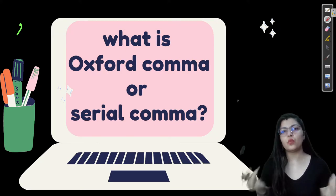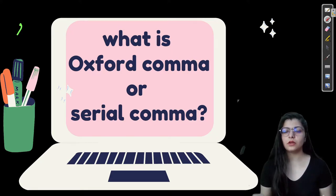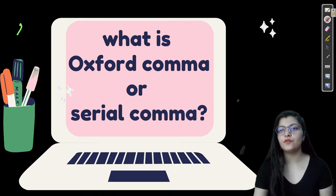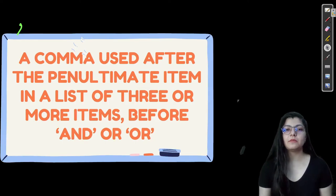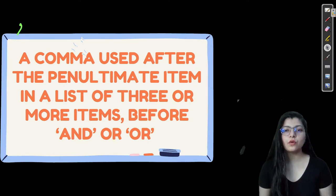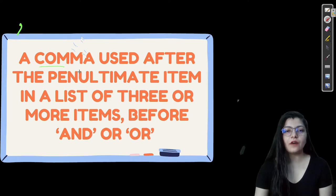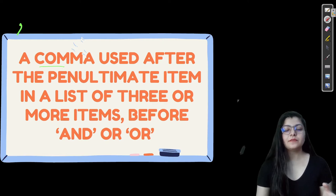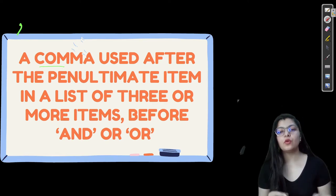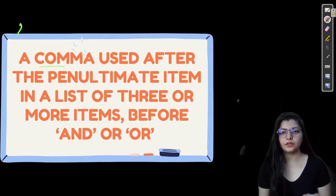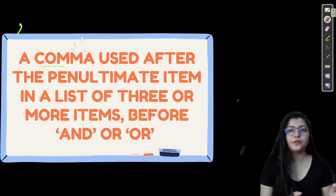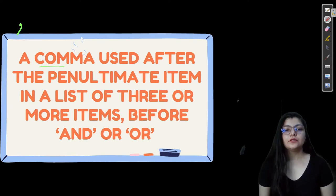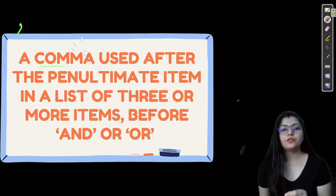Let's discuss its definition. What is the Oxford or serial comma? A comma used after the penultimate item — just focus on the screen. So what does it mean? If you are given a list of three or more items, you have to differentiate all these items, and the Oxford comma comes before the penultimate item in a list of three or more items.